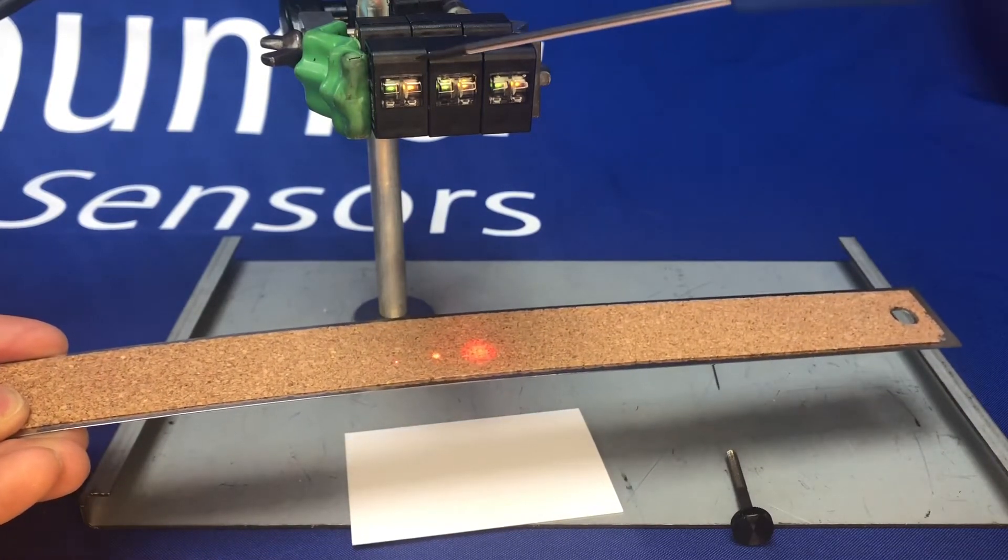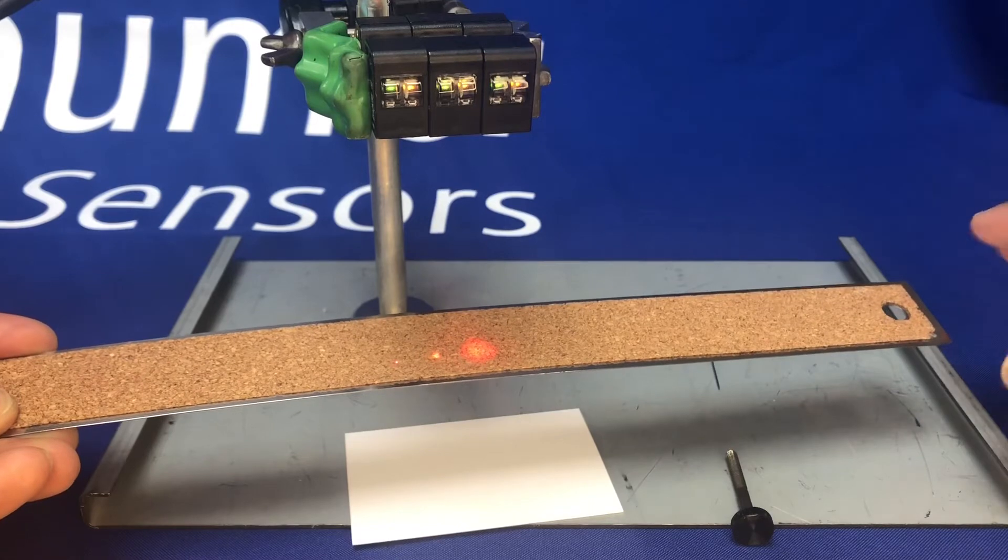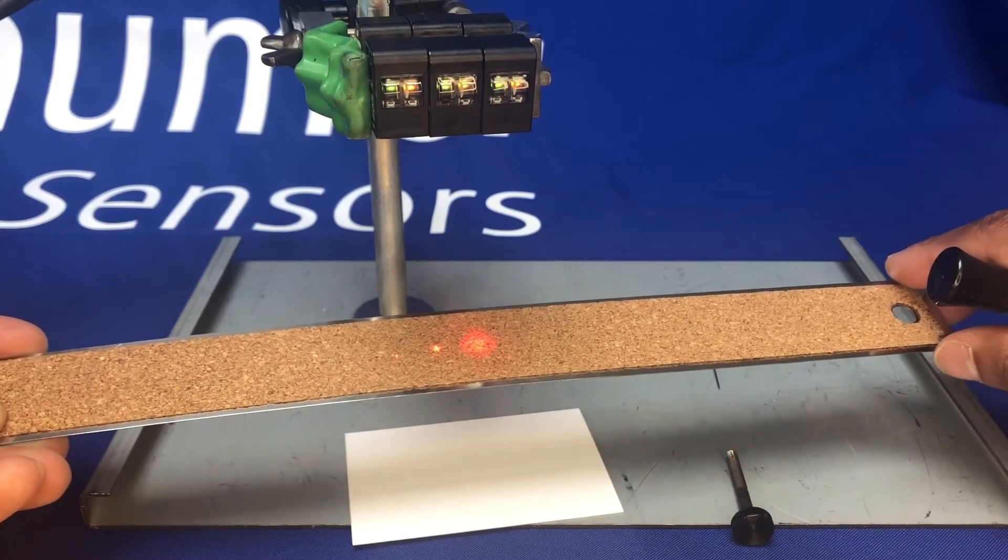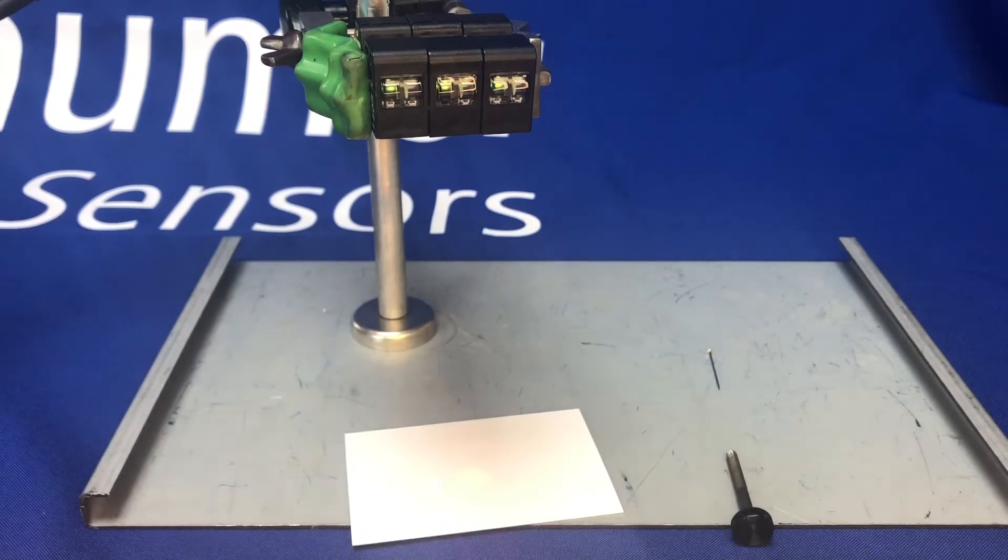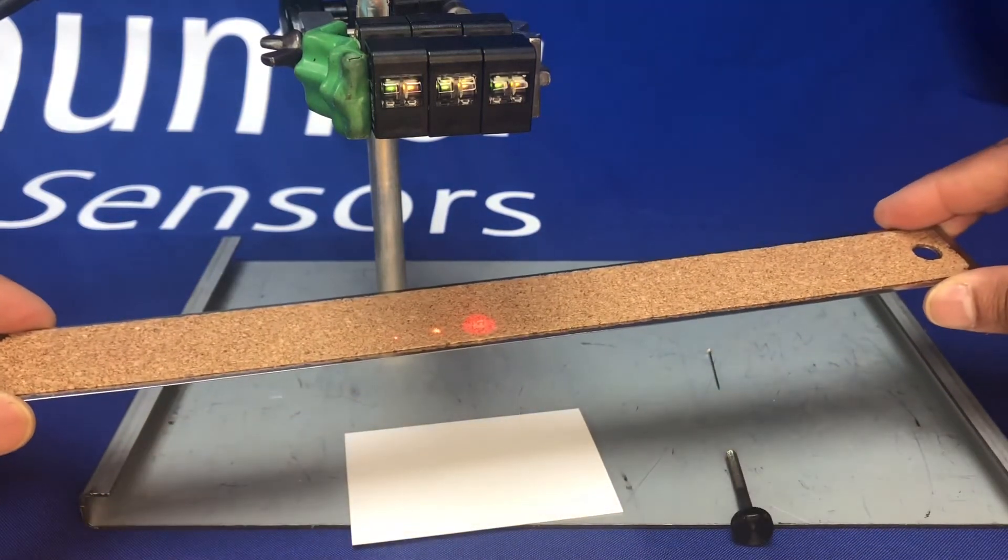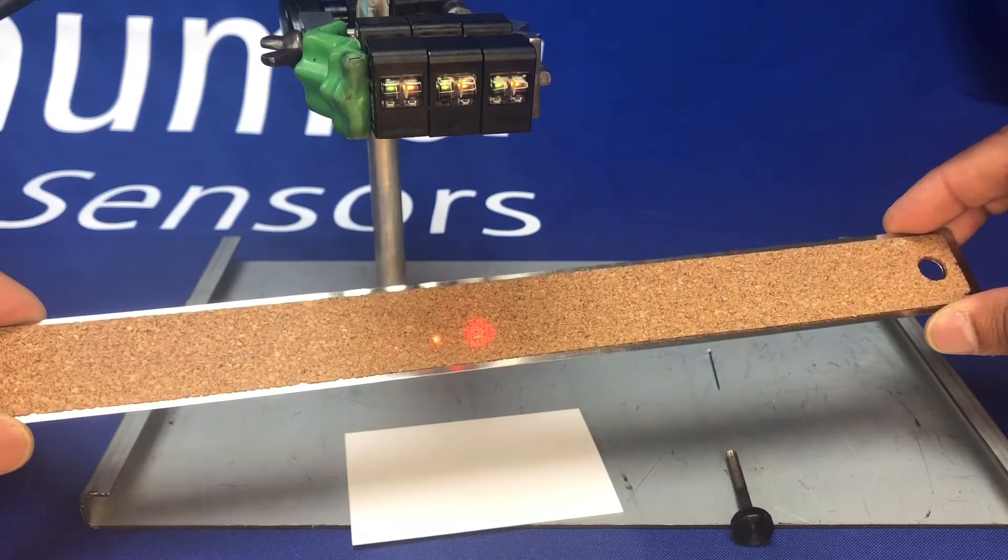Okay, so let's put three different types of targets underneath the sensor so you can see how it performs. As you saw with a large type target, the LEDs come on for all three different types.